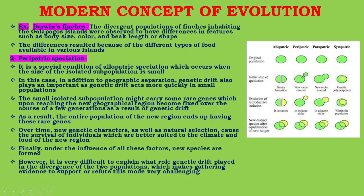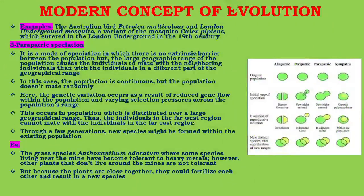However, it is very difficult to explain what role genetic drift played in the divergence of two populations, which makes gathering evidence to support or refute this mode very challenging. Examples of peripatric speciation include the Australian bird Petroica multicolor and the London underground mosquito, a variant of the mosquito Culex pipiens which entered the London underground in the 19th century.